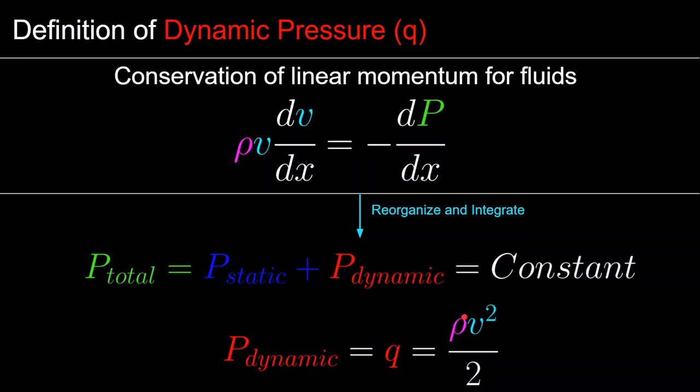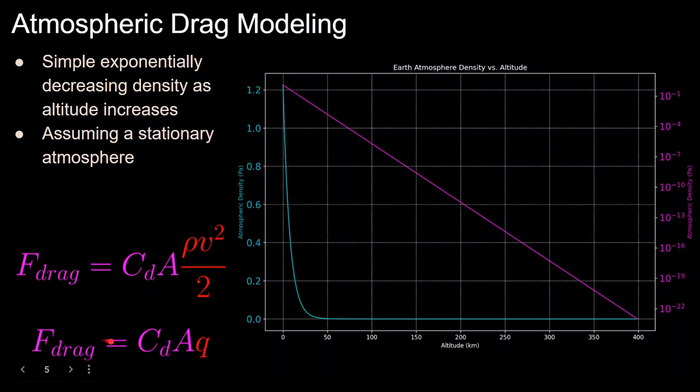This means that dynamic pressure is in units of kilograms over kilometers seconds squared, which is equivalent to kinetic energy per unit volume. Dynamic pressure can also be thought of as a decrease in static pressure due to the velocity of a fluid. And even though dynamic pressure was derived assuming incompressible flow, it's still useful in analyzing compressible flows, and as we saw in this equation, is directly proportional to drag force.